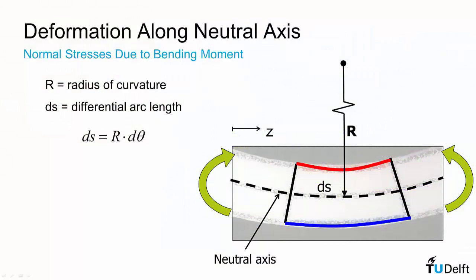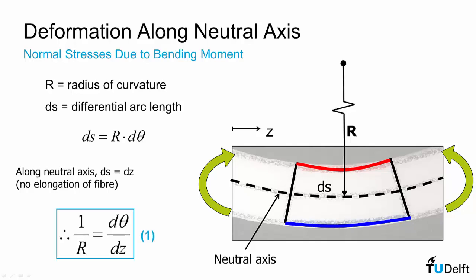Now the convenience of measuring r with respect to the neutral axis is we say that the neutral axis does not deform. So ds in our deformed state is precisely equal to the undeformed length dz. Therefore we can reduce this formula to 1/r = dθ/dz. So this is our first equation that we will use to describe the deformation.